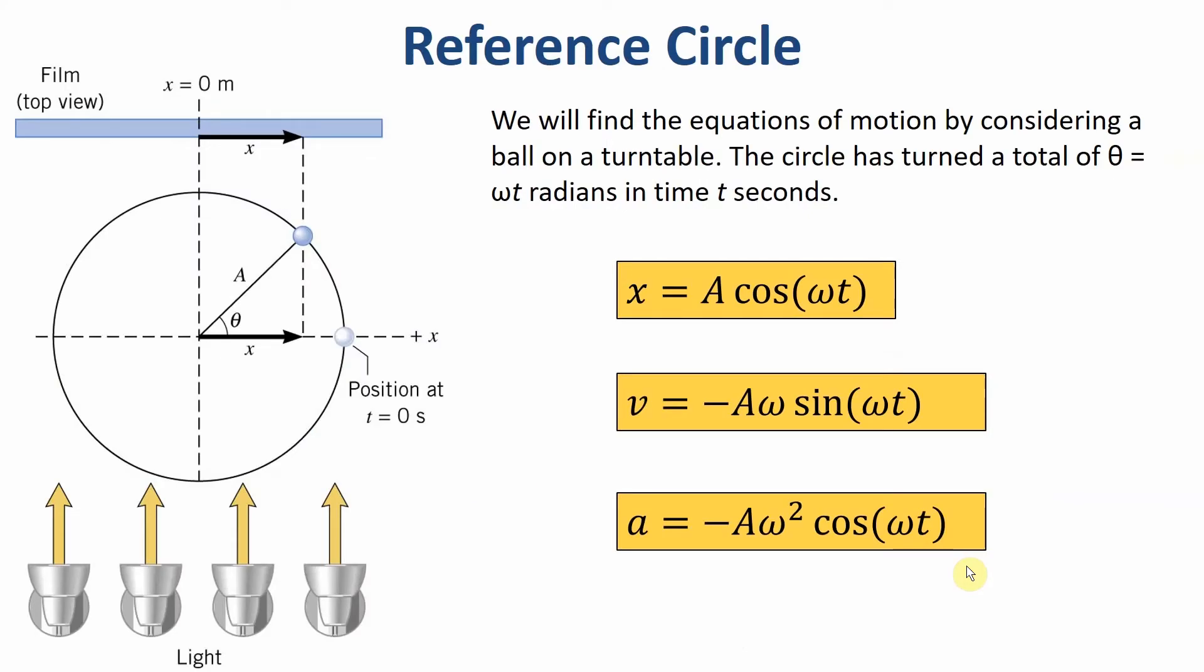If I want to find out my motion in terms of displacement, velocity, and acceleration, one way to think about this is, imagine I have some kind of mass sitting on some turntable, and my turntable is spinning at some angular velocity omega, just like we talked about in the last unit. It's turned a total of theta, which is omega t radians in t seconds, and then I could figure out the x component of where it is for displacement, velocity, and acceleration.